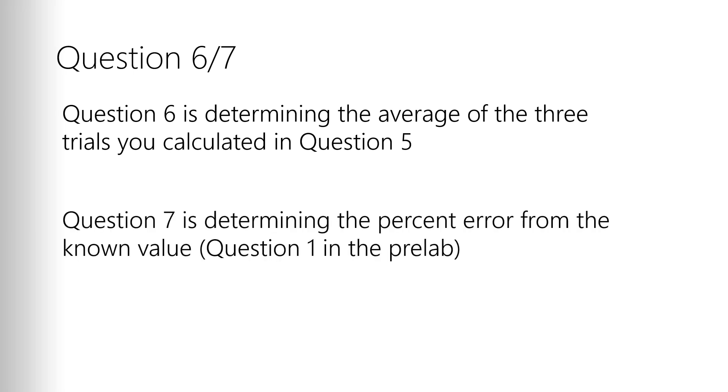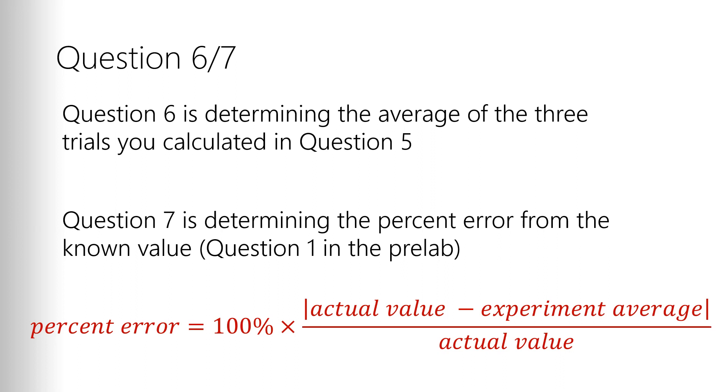And then question seven is take that value that you determined, that experimental value determined in question six, that average value, and determine the percent error from the known value. Now the actual value was question one in your pre-lab. What is the molar mass of butane? So you sit there and calculate it. Well, it has this many carbons, this many hydrogens, and you calculate it out. So once you calculate it out, you have that. That's again, question one. I think almost everybody got it right if I remember looking at pre-labs. So you've got that. And to do a percent error, it's 100% times the absolute value. That's what those vertical bars mean. The absolute value, the actual value minus your experiment. So the actual value is the value from your pre-lab. The experiment average is the answer to question six. The average of those three values from question five. So actual value minus the experiment average divided by actual value.